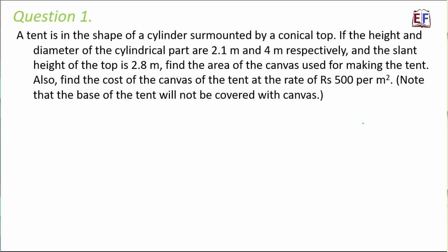Question number 1: A tent is in the shape of a cylinder surmounted by a conical top. Let us first draw the shape — we have a cylinder and a cone surmounted on top. If the height and diameter of the cylindrical part are 2.1 meters and 4 meters respectively, and the slant height of the top is 2.8 meters, find the area of the canvas used for making the tent.